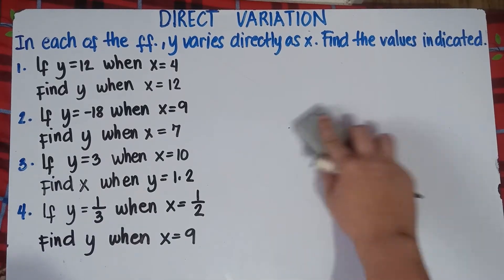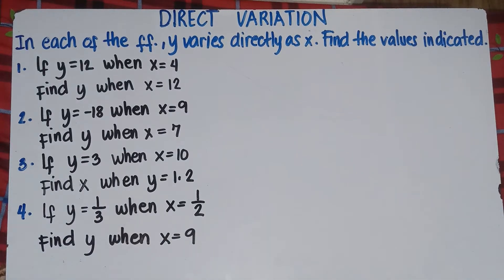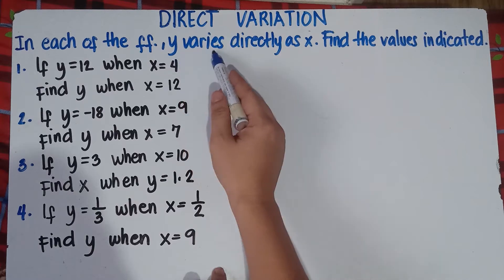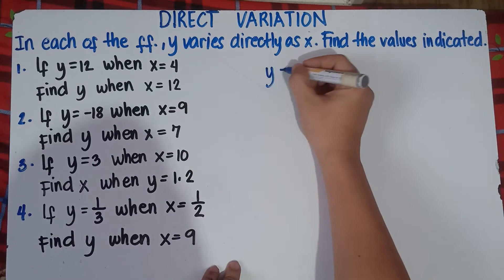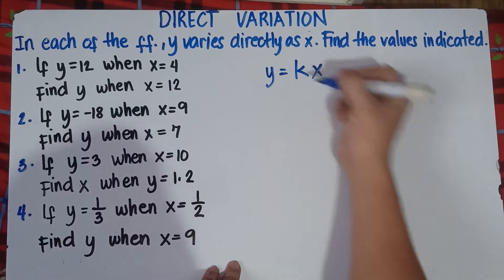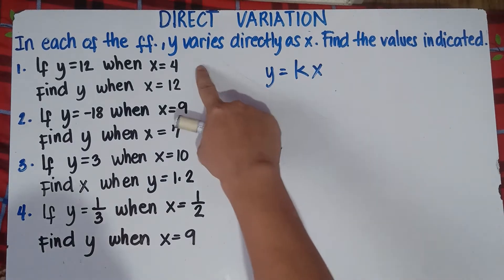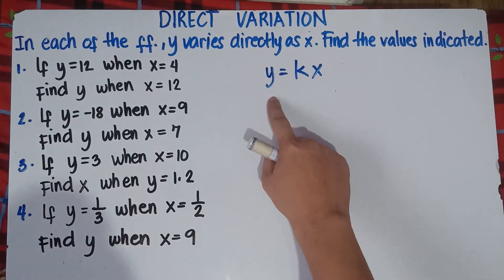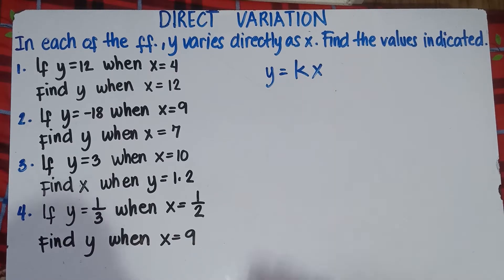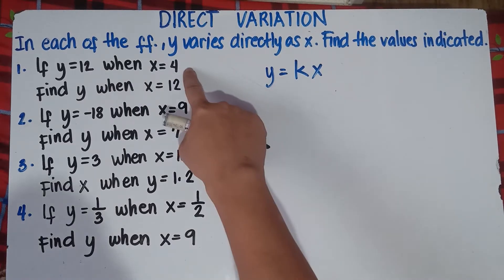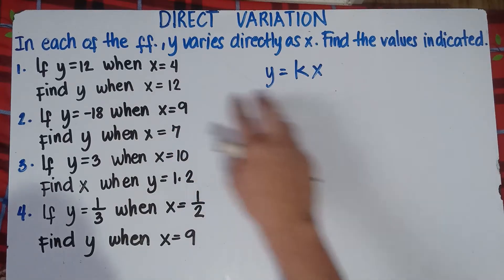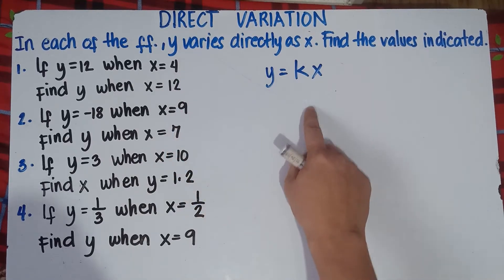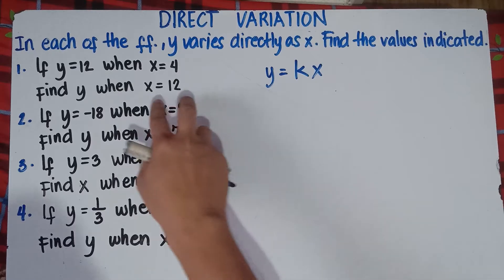To solve this one, class — very easy. First thing to do is you need to find the value of k. So you write this equation: y varies directly as x, so you can write that as y equals kx.